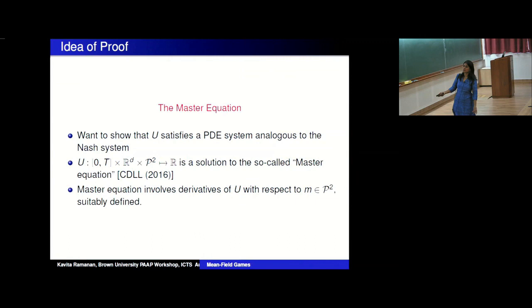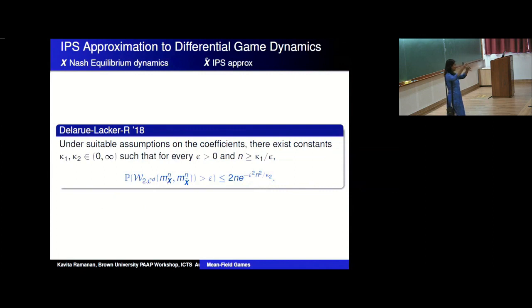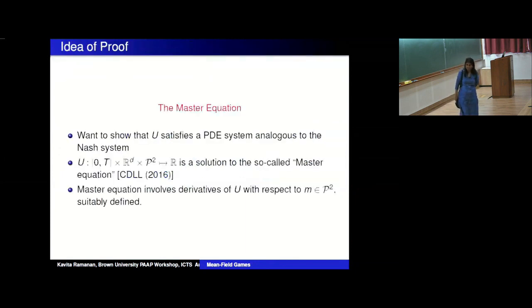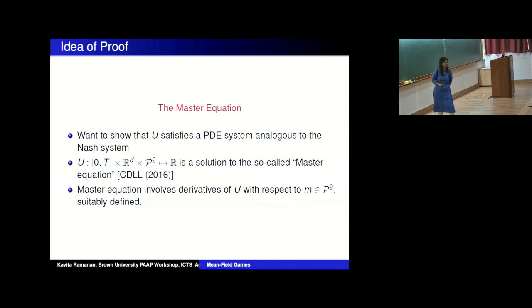To show U is close to V_i^N, you note that V_i^N satisfies a PDE. Since U is a function of time, space, and a probability measure M, you want U to also satisfy a PDE and show the two PDEs are close. This leads to the master equation, derived by Chassagneux-Crisan-Delarue and Lasry-Lions around 2016. The master equation involves derivatives of U with respect to a probability measure, which requires a notion of differentiation on the space of probability measures.